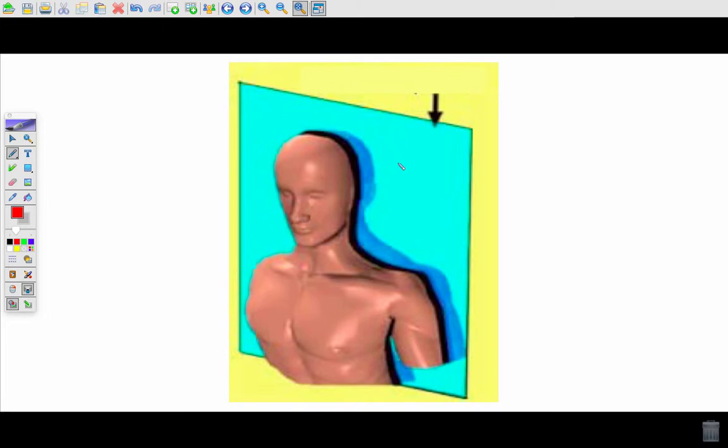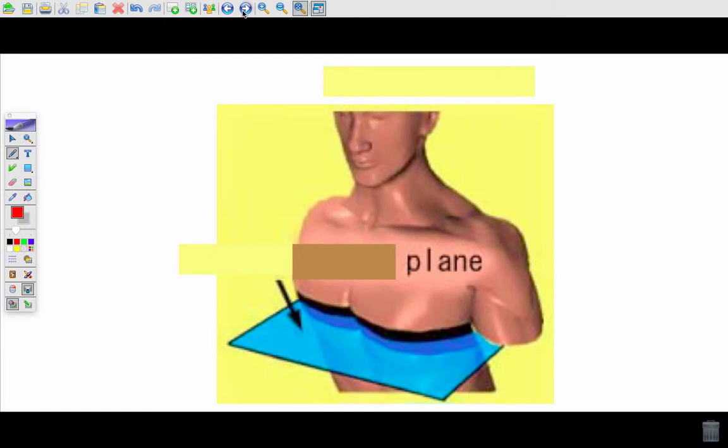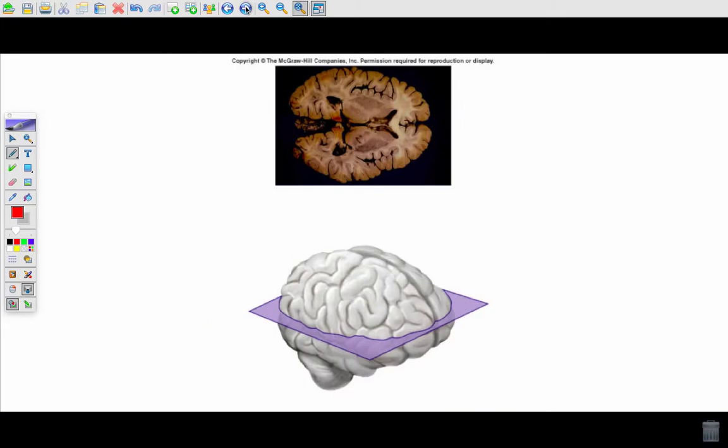Alright what's this one? This is frontal or coronal. Take a second look at this one. Sagittal. It's sagittal because it's not straight down the midline of the body. That would make it mid-sagittal. This one is transverse, upper and lower portions.